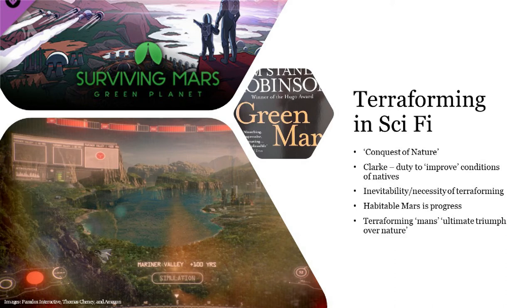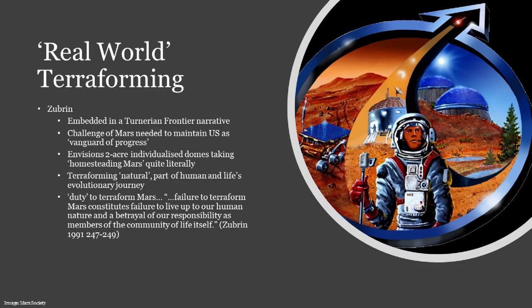Dr. Robert Zubrin, President of the Mars Society, is one of the leading advocates for human presence on Mars and indeed terraforming the planet. He devotes an entire chapter of his 1997 book The Case for Mars to terraforming and wholeheartedly embraces the Turnerian frontier narrative. The epilogue is entitled The Significance of the Martian Frontier and draws a direct link to Turner's speech. Zubrin describes Turner's frontier idea as a brilliant insight into the basis of American society and character, arguing the United States needs a frontier to remain the vanguard of progress. As the Western frontier has closed, Mars will have to be it. He even somewhat literally applies the Western analogy, envisioning individual Martian homesteads of two-acre domes.